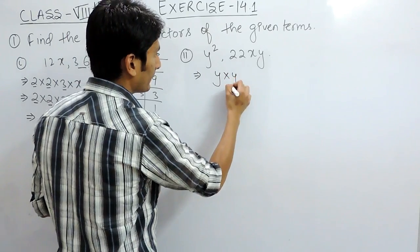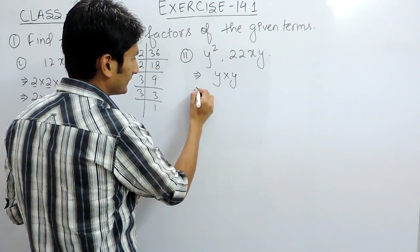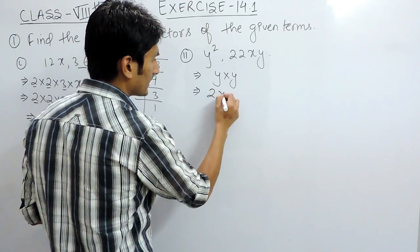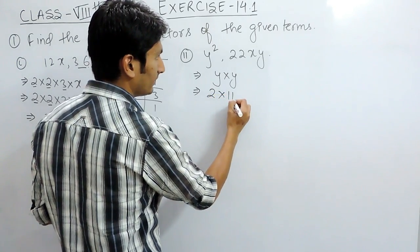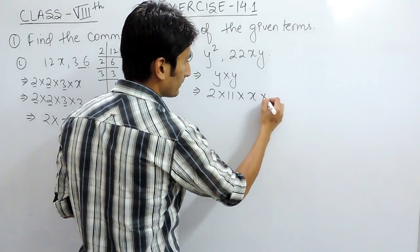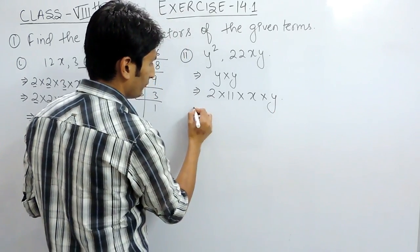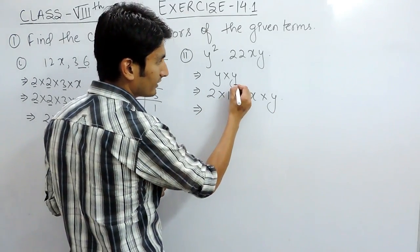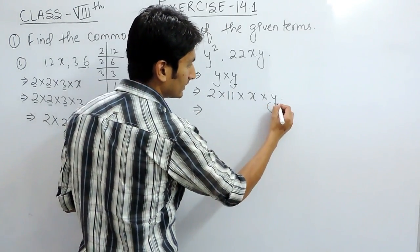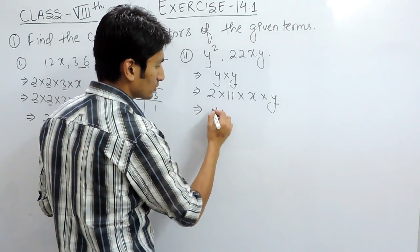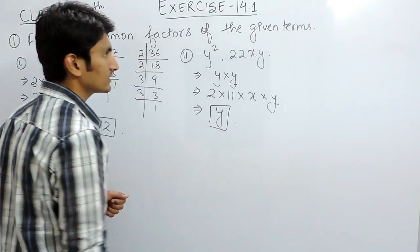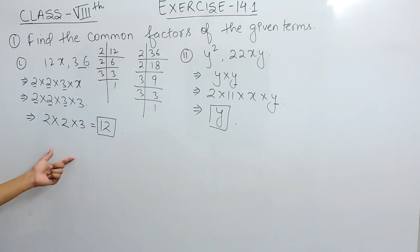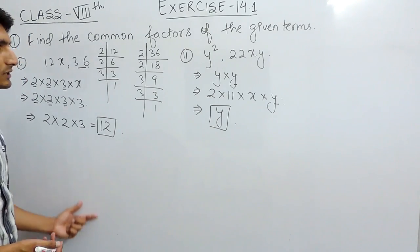Now let's solve the second part. The first term is y², which means y multiplied by y. The second term is 22xy, which can be written as 2 × 11 × x × y. To find the common factor, there is only one common factor, which is y. So y is the required answer for this second part.